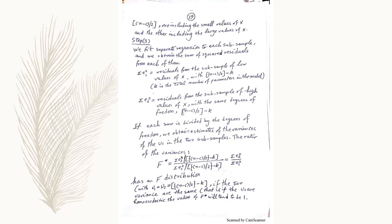and you can easily understand them. I have written this in full details. The F star, the F calculated, is equal to summation e2 square divided by summation e1 square. And this F has an F distribution with certain degrees of freedom for numerator and denominator, which are both equal to each other. If the two variances are the same, that is, if the u's are homoskedastic, the value of F star will tend to be equal to 1.